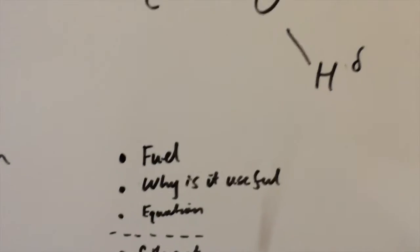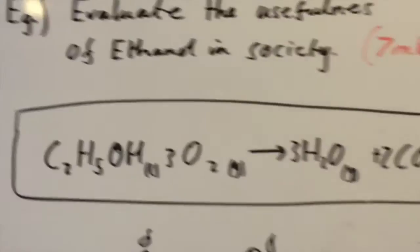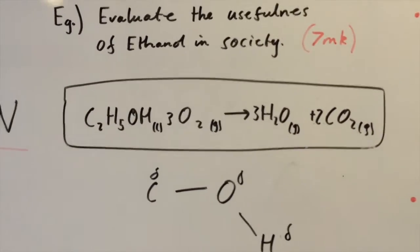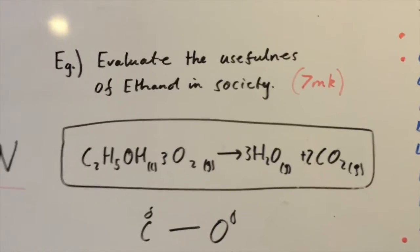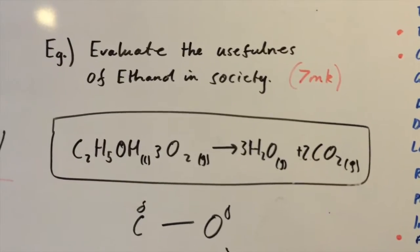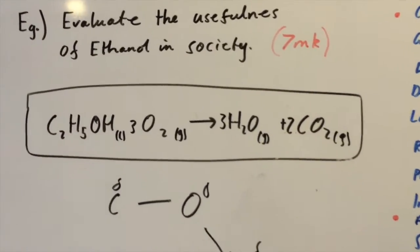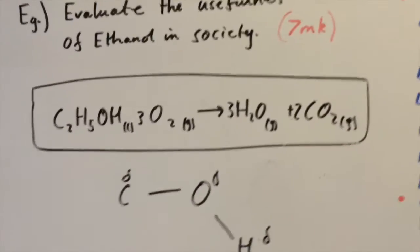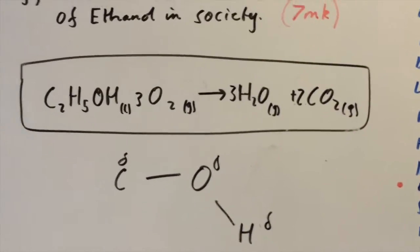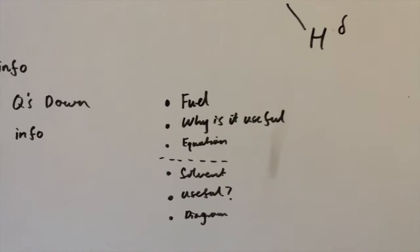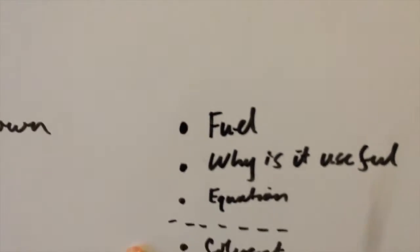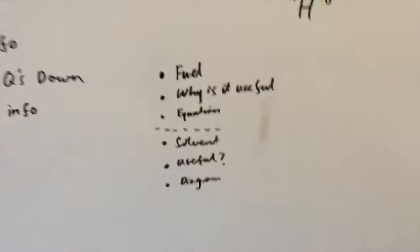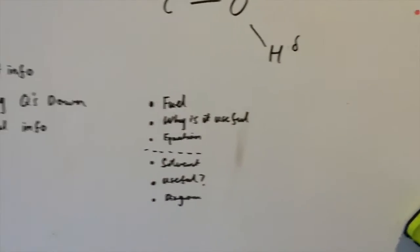And you might feel like you've answered the question there and really what they're looking for as well, even if they haven't mentioned it, is they're looking for an equation. So here I've also written what you need to write in, it's an equation for the complete combustion of ethanol. Make sure you balance it, make sure you write the correct states in and then we're straight on to why ethanol can be used as a solvent and this is where the other half of the marks are going to come from.